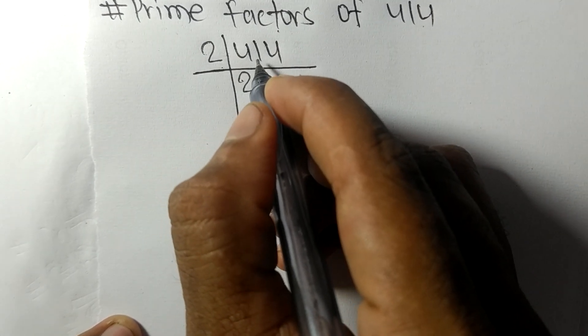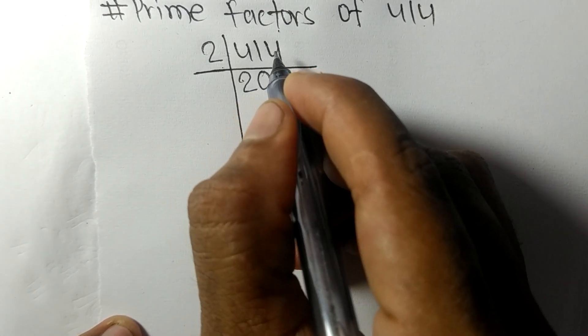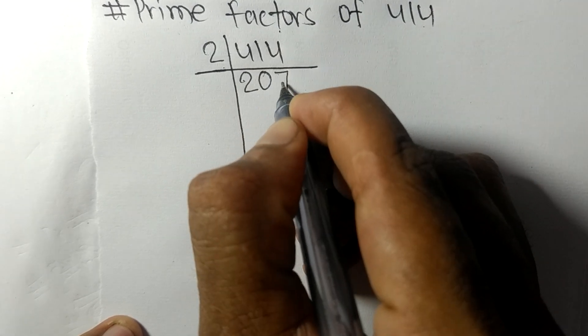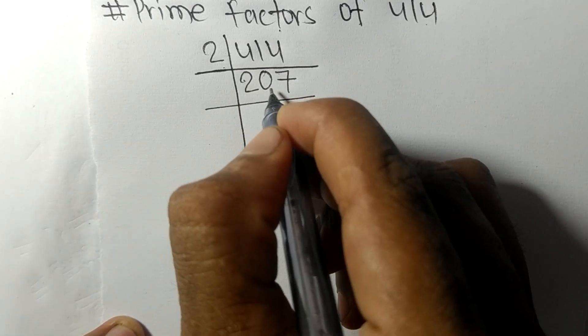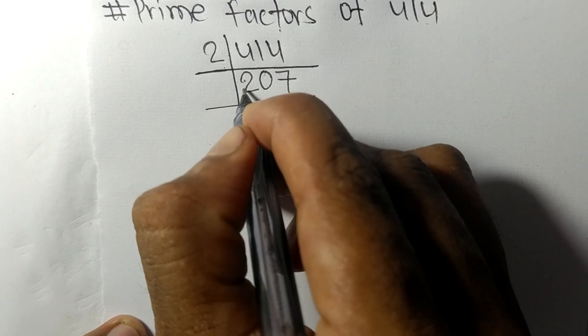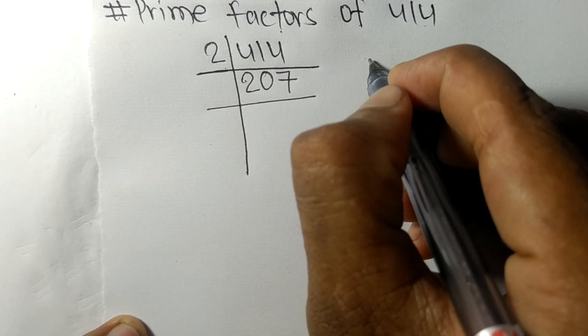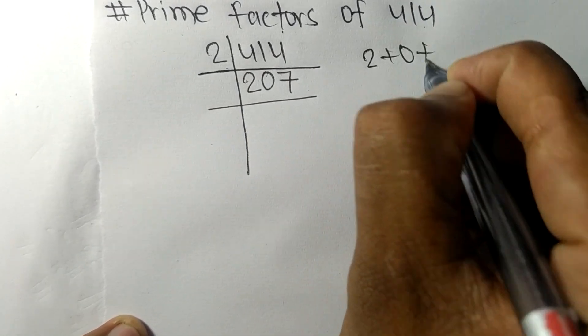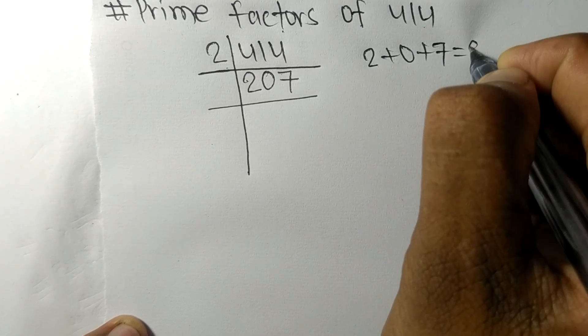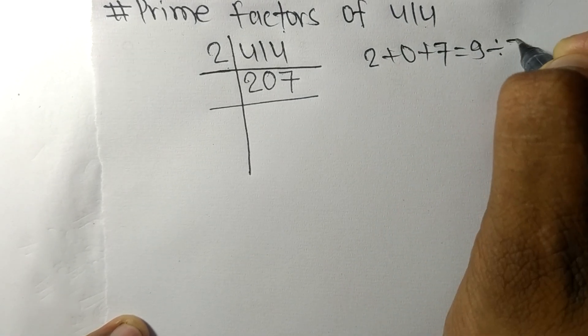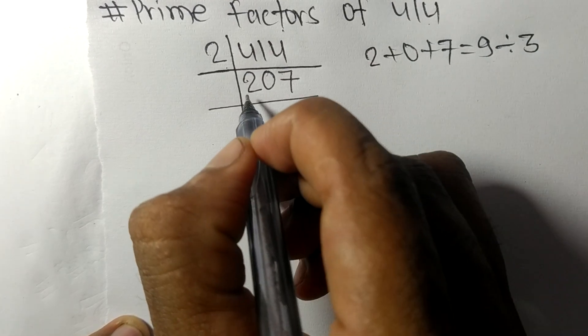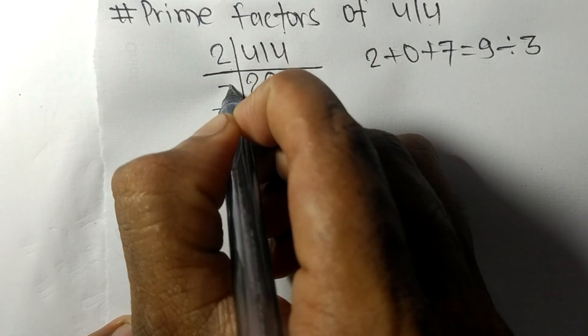Now we got 207. When we add all these digits, 2 plus 0 plus 7, we get 9, and 9 is exactly divisible by 3, so the whole number is divisible by 3. 3 times 6 is 18 remainder 2, 27, 3 times 9 is 27. We get 69.